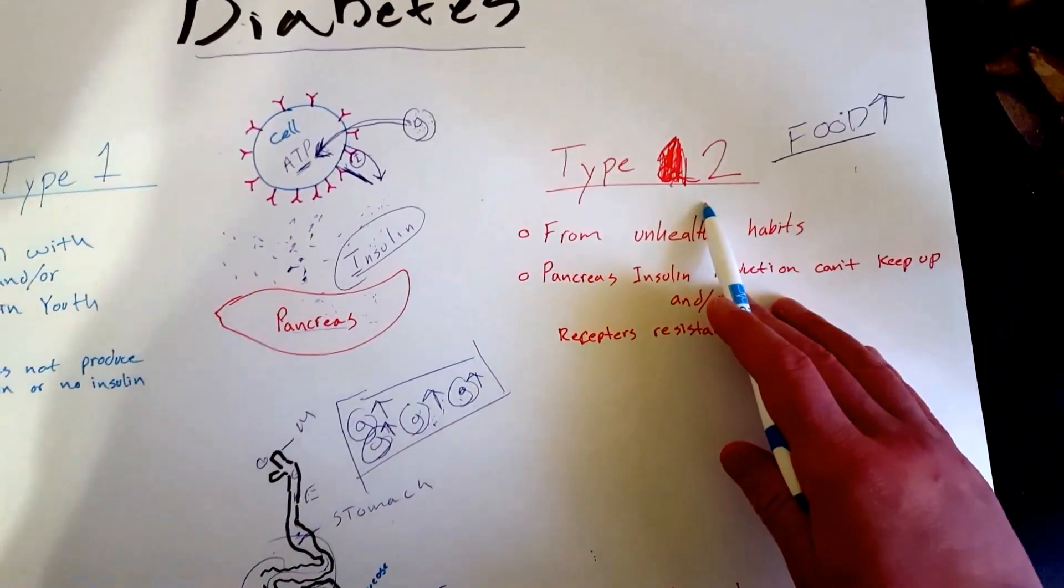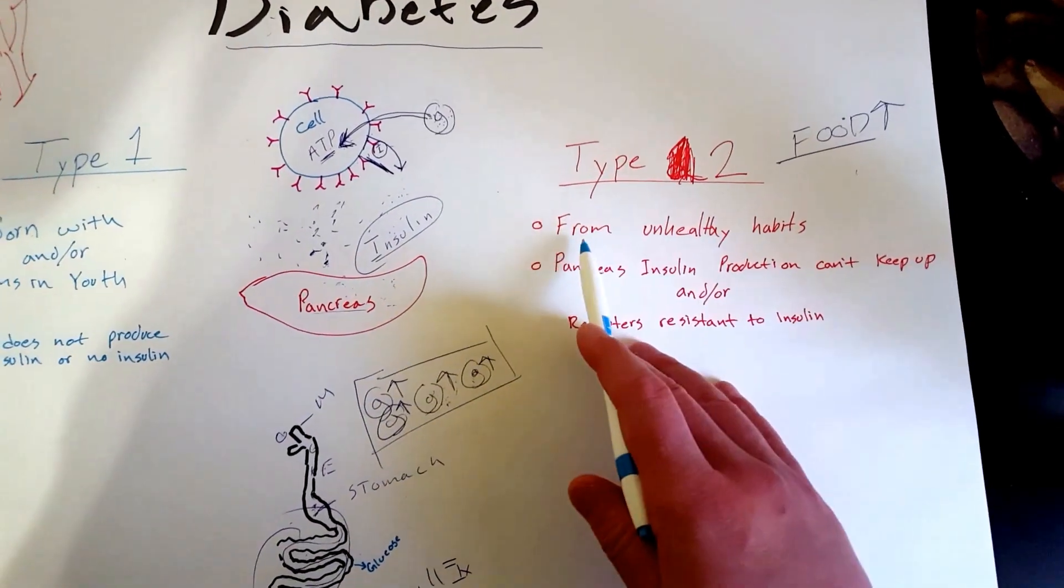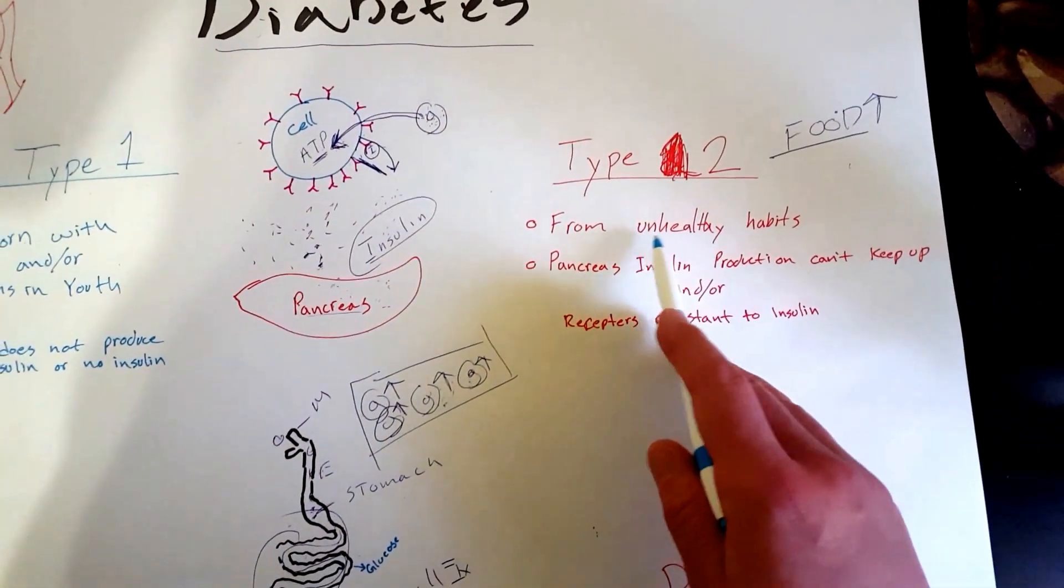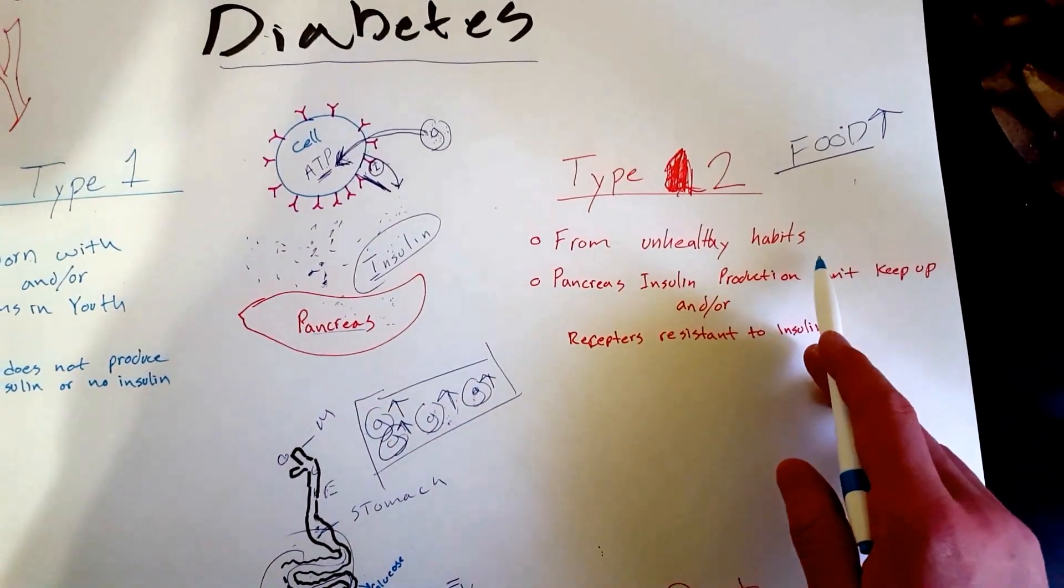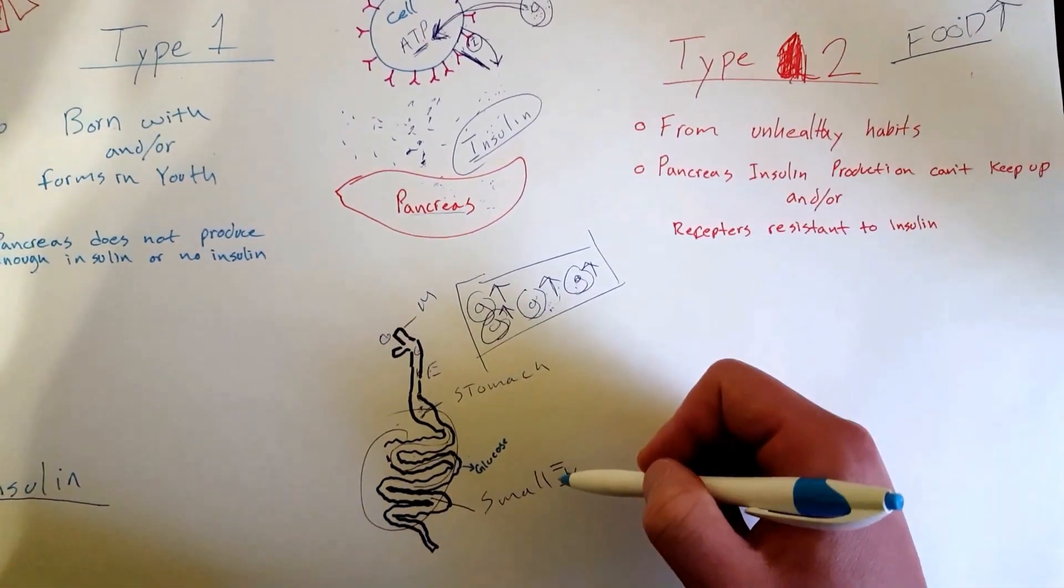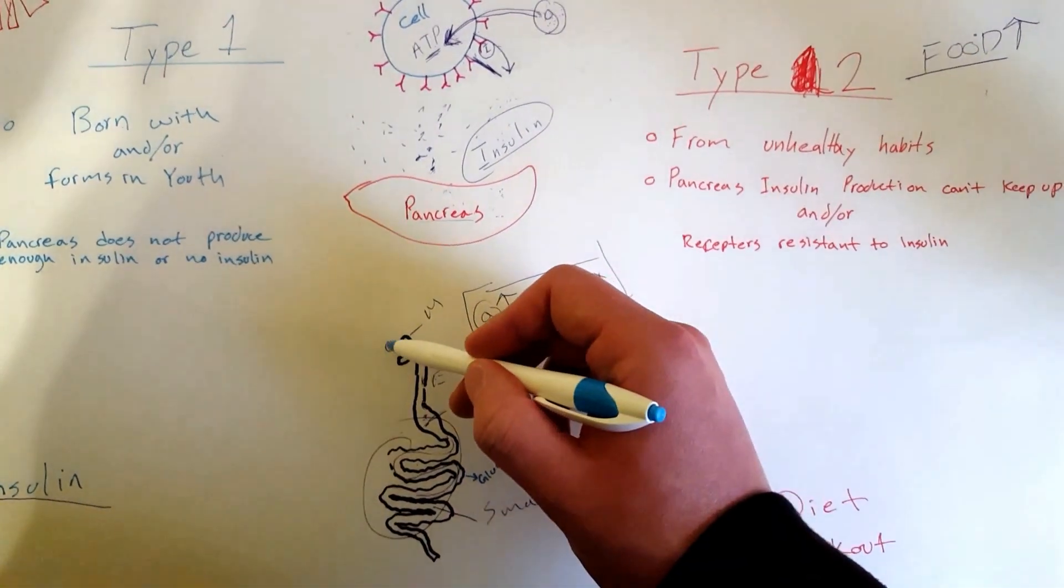Type 2 diabetics usually develop it over time as people get older, and it's from unhealthy habits and bad eating habits. This is the best example I can show you.